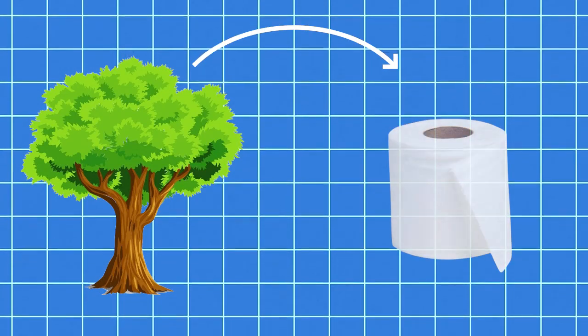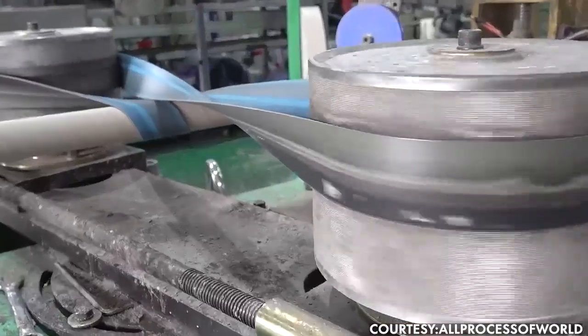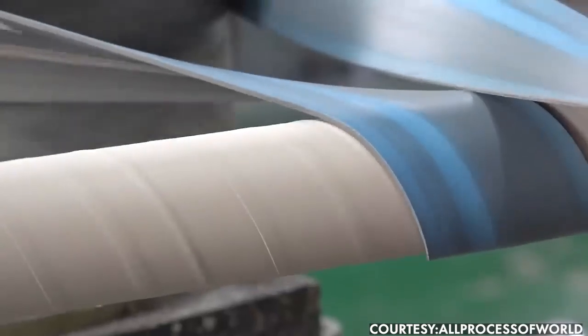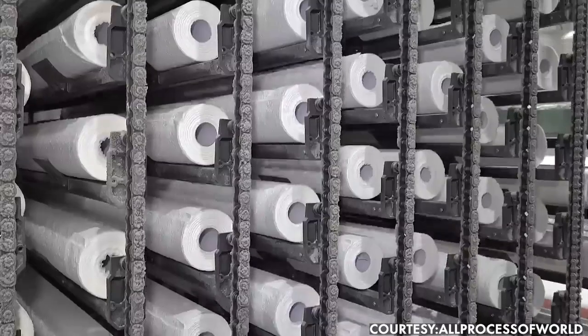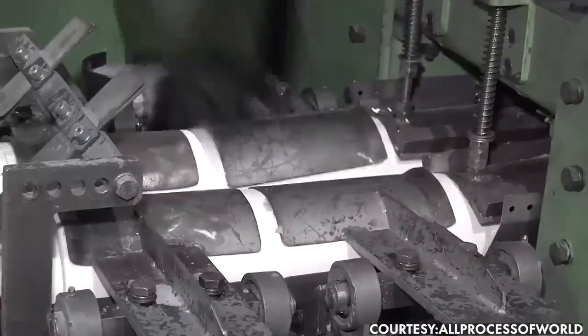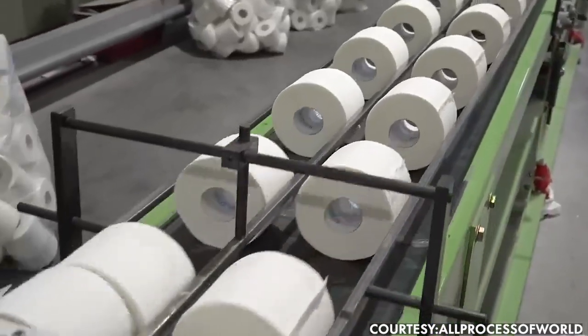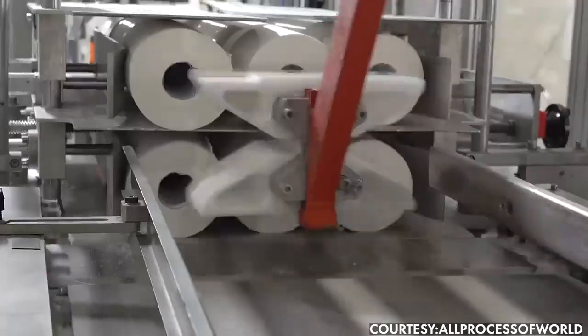It takes complex technology to turn trees into toilet rolls. Wood processing, chemical engineering, and mechanical engineering all play a part in delivering rolls with the right size, texture, and properties. So how do they make toilet paper?